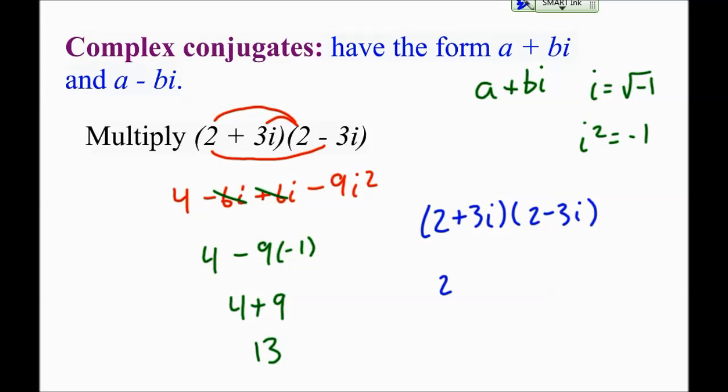So I'm going to do 2 squared plus 3 squared. So that's 4 plus 9. And that equals 13. And so hopefully you see how these two things relate to each other. So that is a quick way to multiply complex conjugates.